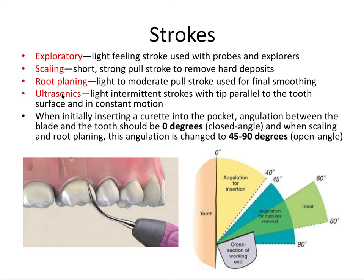For ultrasonics, it's a light intermittent stroke with the tip parallel to the tooth surface. Instead of placing the tip against the tooth at a 90-degree angle — which could damage the tooth surface — you keep it parallel, using light intermittent strokes with constant motion, being careful not to hold it over the same area of the tooth for more than a second or so.